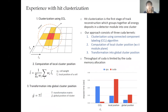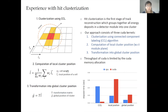This slide shows our experience with hit clusterization with CUDA. Hit clusterization is the first stage of track construction which groups energy deposits in the detector module into one cluster. Finding the clusters created by one particle can be done using the connected component labeling algorithm, called CCL. Once we find those clusters on the detector module, we can compute the local cluster position using the cell weight, which is the energy deposit, and the local position of each cell, by averaging them to get the average location. We can then transform this into the global cluster position by applying a transformation matrix.